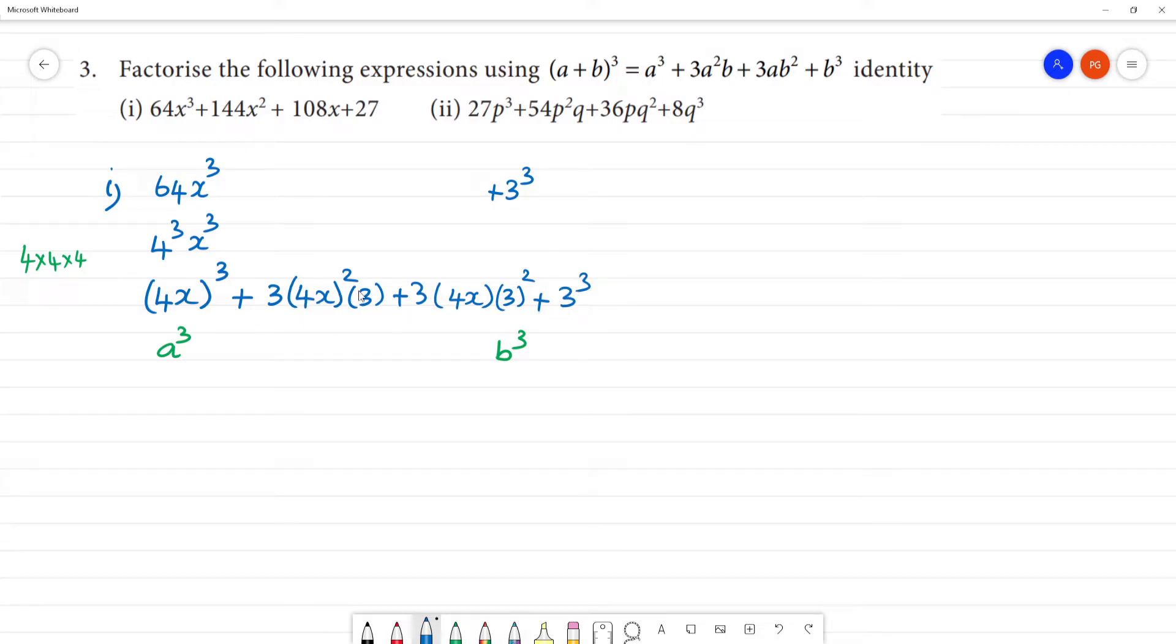4x² equals 16x². 16 times 3 is 48. 48 times 3 equals 144. 48 multiplied by 3 - 3 times 24 is 144.